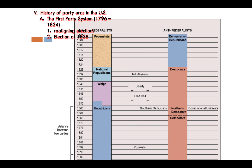The election of 1828 changed everything. Jackson won, and the Democrats became consistently the party that represents the more ordinary people in society. This is our first realigning election.